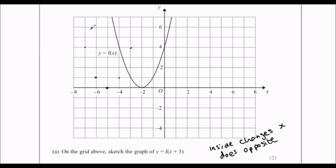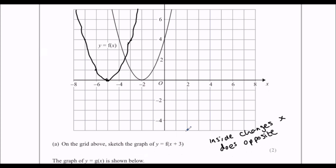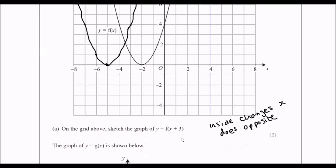And then I should try and join it up as best as I can — it's not looking too good. Well, you get the idea; it's supposed to move back 3 spaces. Hopefully you'll be able to draw a nicer, smoother curve than that, but it's moving back 3 spaces.